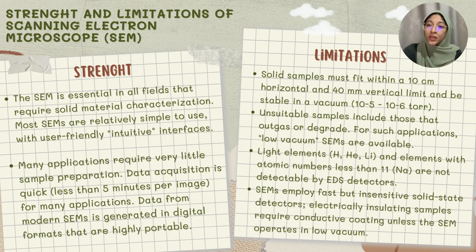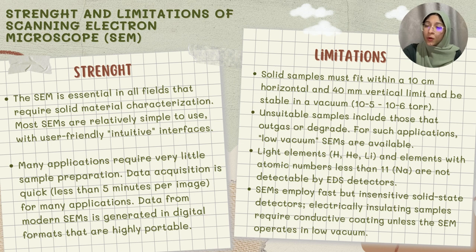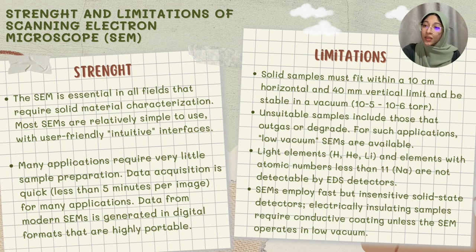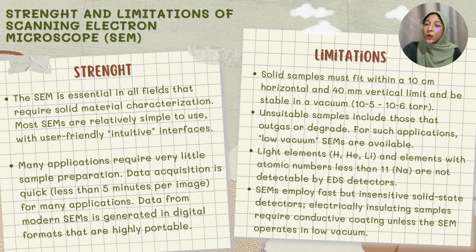Data from modern SEMs is generated in digital formats that are highly portable. However, for the limitations of SEM: a solid sample must fit within a 10-centimeter horizontal and 4-millimeter vertical limit and be stable in vacuum. Unsuitable samples include those that outgas or degrade, though low-vacuum SEMs are available for such applications. Light elements with atomic numbers less than 11 are not detectable by EDS detectors, and electrically insulating samples require conductive coating unless the SEM operates in low vacuum.